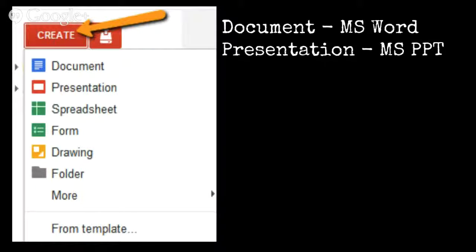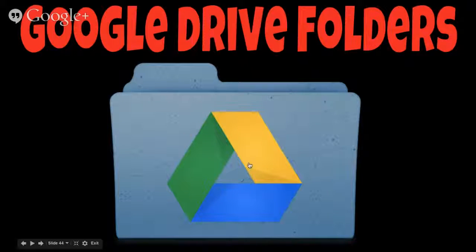What I recommend, though, is that from now on you start creating your documents directly in Google Drive. When we have Chromebooks, we won't have Microsoft because you can't install programs like Microsoft onto a Chromebook. So you'll want to get used to using Google Drive to create documents you'd normally make in Microsoft Word, and presentations you'd normally make in Microsoft PowerPoint. Click 'Create' — if you click Documents, that's very similar to Microsoft Word; Presentations is very similar to Microsoft PowerPoint. Those are the two things we'll concentrate on today, along with how to make folders.